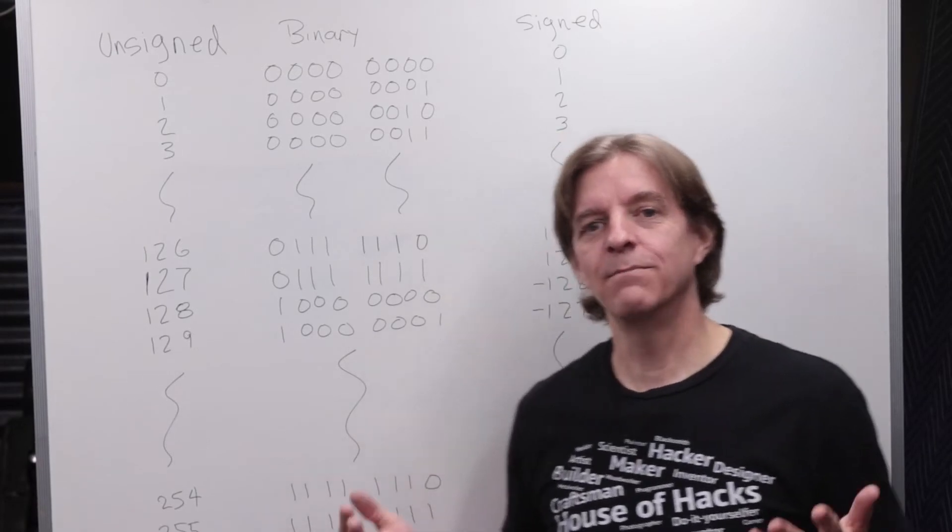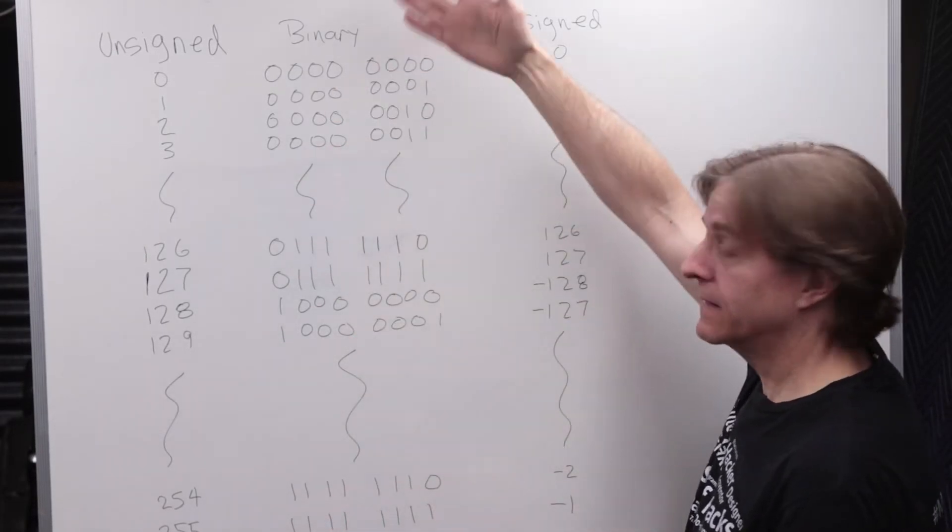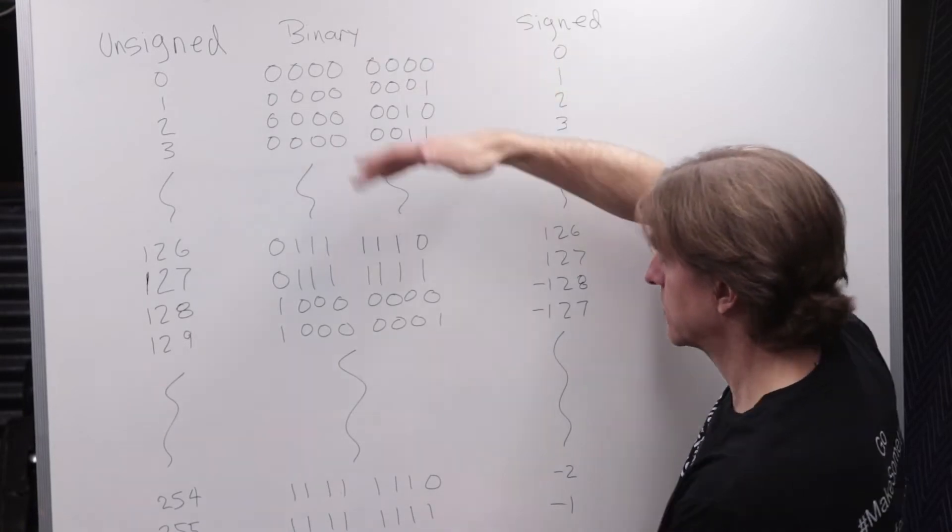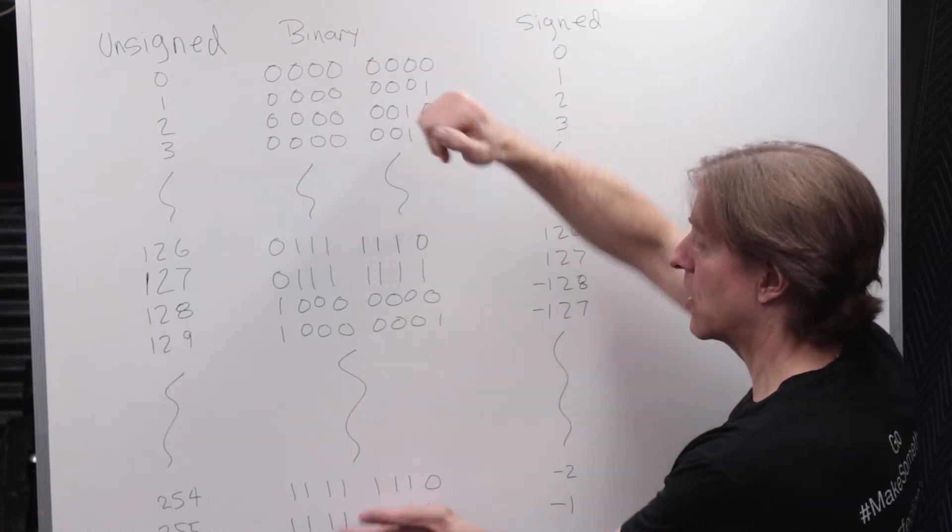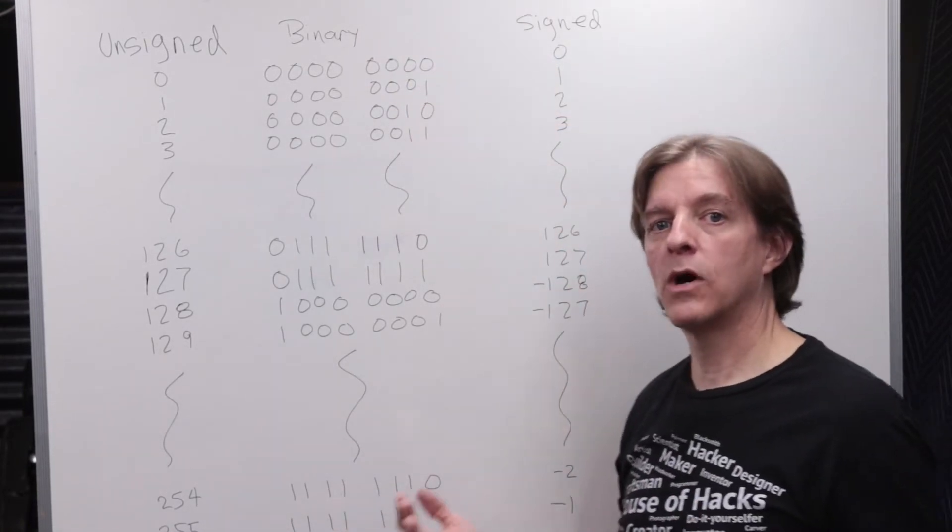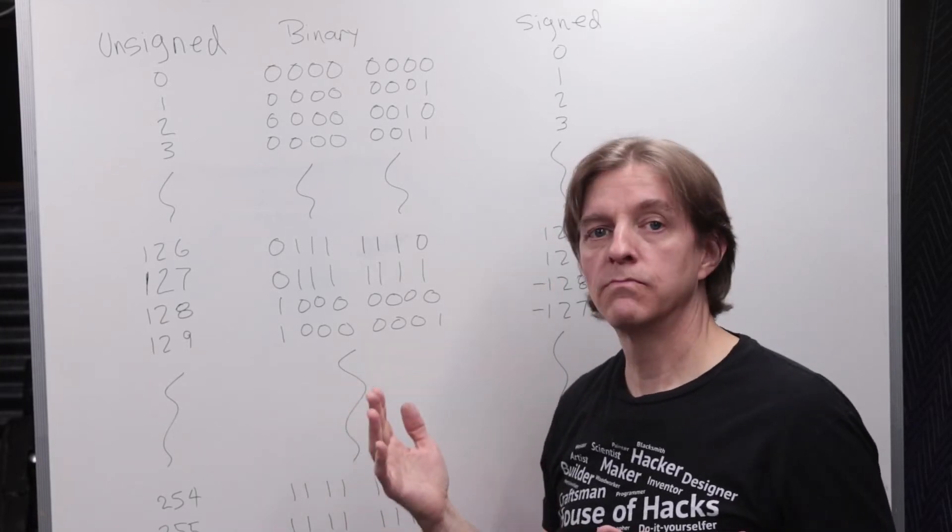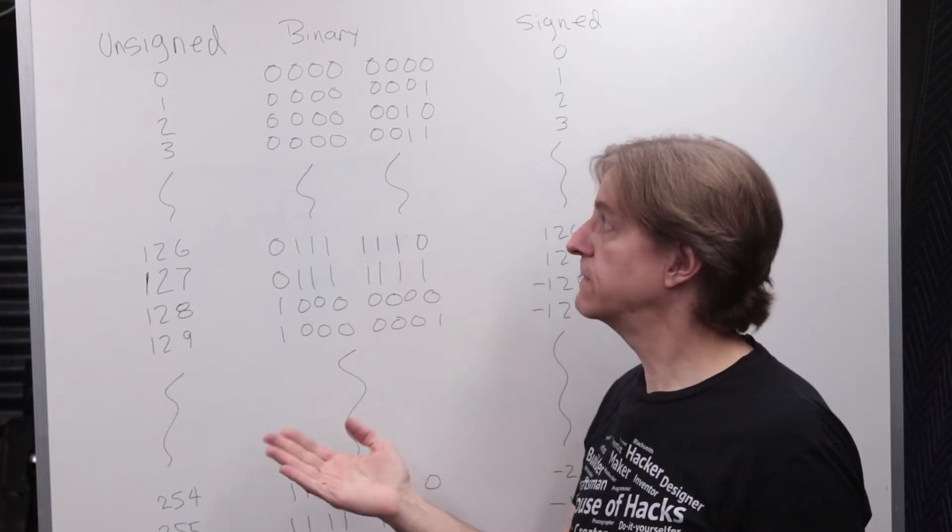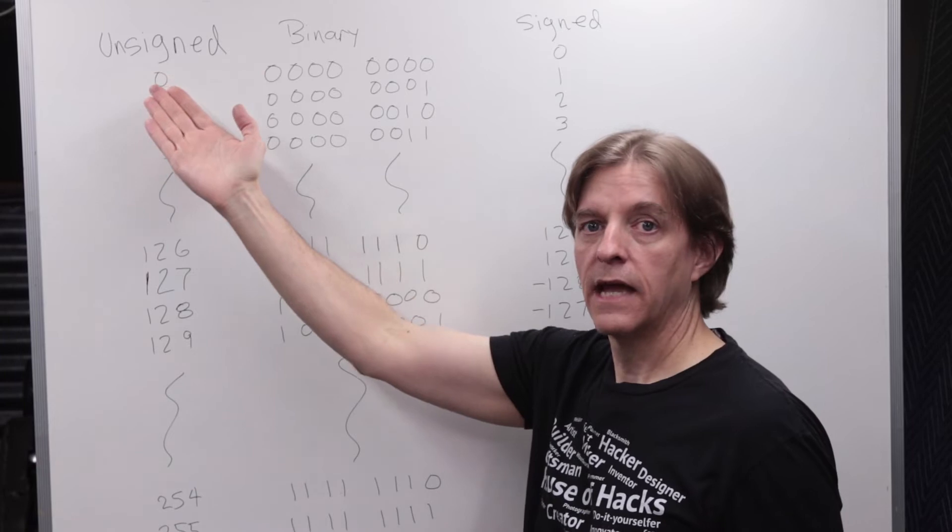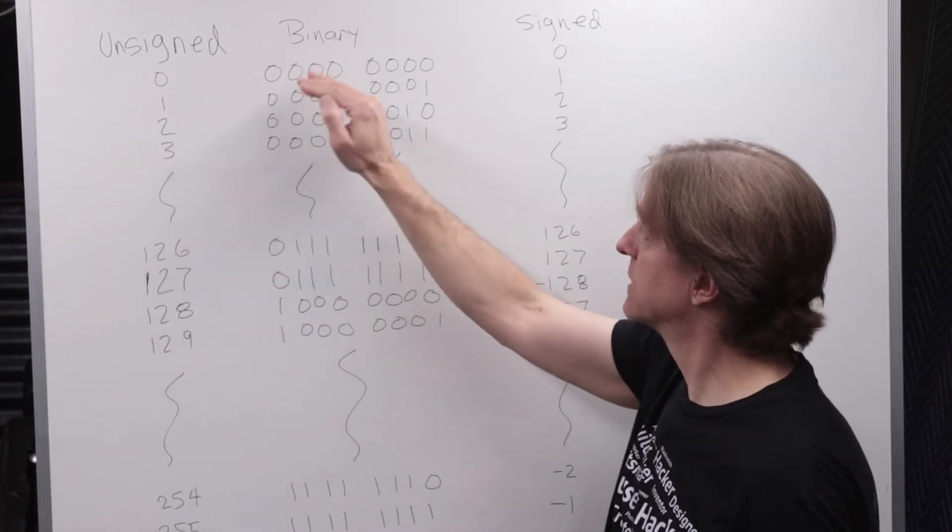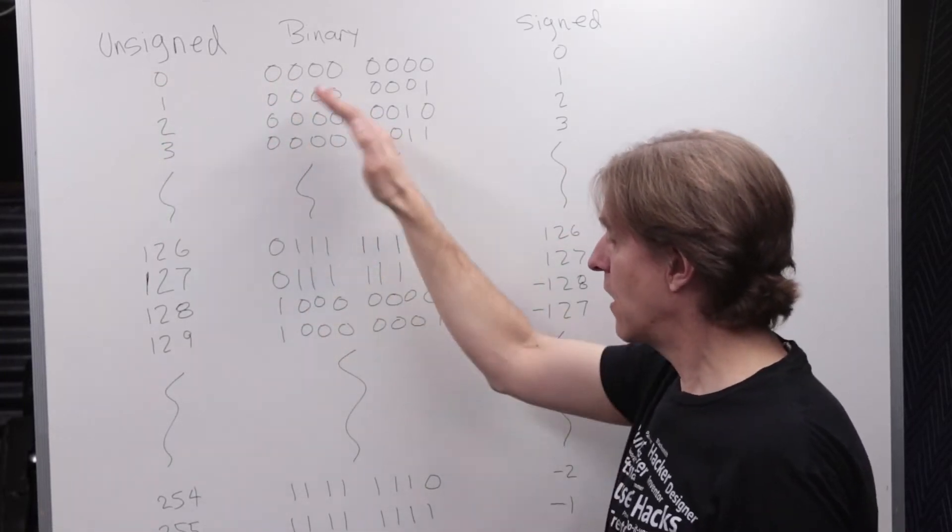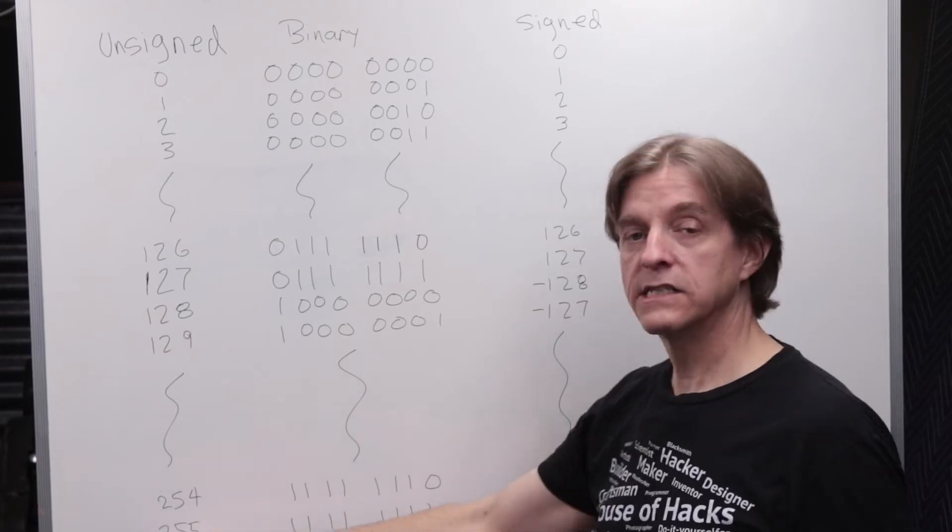As we've discussed, computers only deal with binary numbers, in this case 8 bits, from 0 to 255, all 0s to all 1s. When a programmer wants to use numbers in this range, they just define the memory as being unsigned. And when they do that, the computer will treat 0 as 0, 1 as 1, all the way up to all 1s as 255.